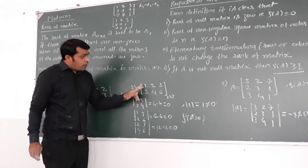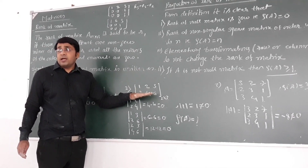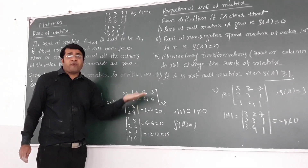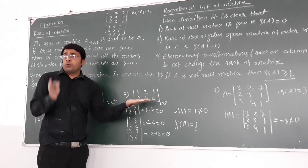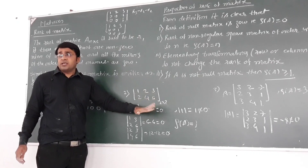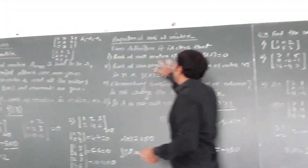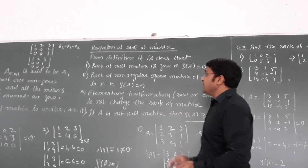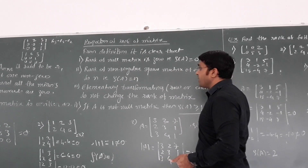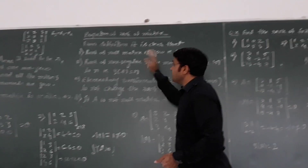One more thing: if all elements of the matrix are 0, then what will be the rank? Definitely it will be 0, because it will be a null matrix. If you find out all minors of order 2 by 2, 1 by 1, 3 by 3, all will be 0. Therefore, the rank of a null matrix is always 0. I have listed the properties here: rank of null matrix is 0, and rank of a non-singular square matrix of order n is n.